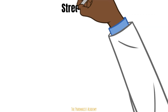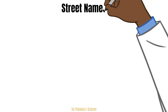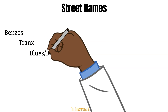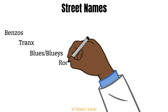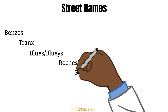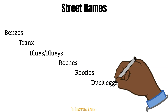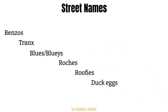Benzodiazepines are well known on the streets because of the abuse potential, and because of this, they have specific street names: benzos, tranks, blues or blueies, roshies, roofies, duck eggs, mother's little helpers.